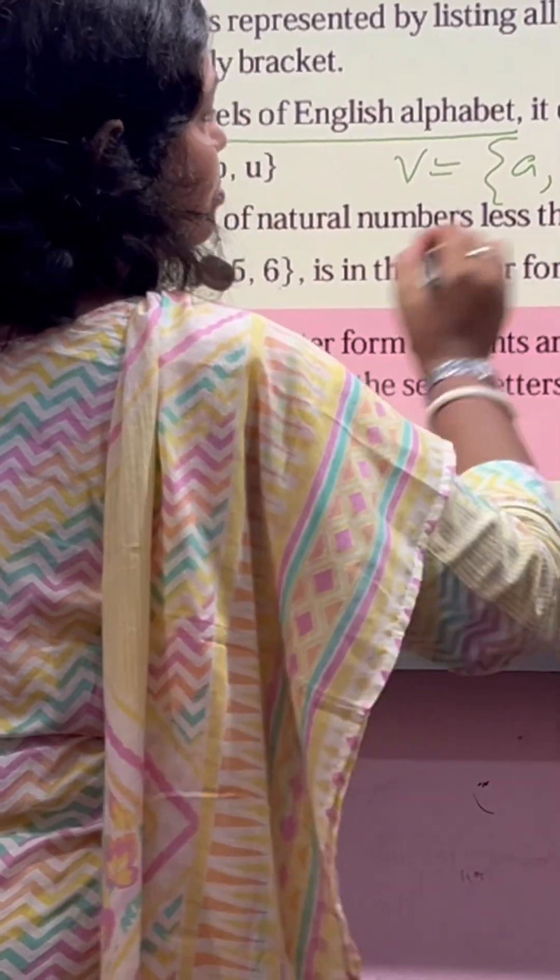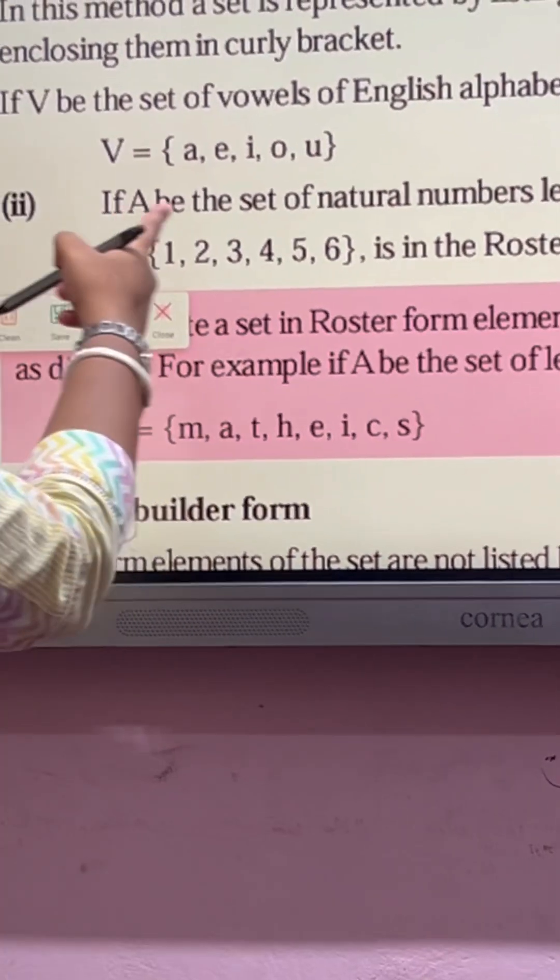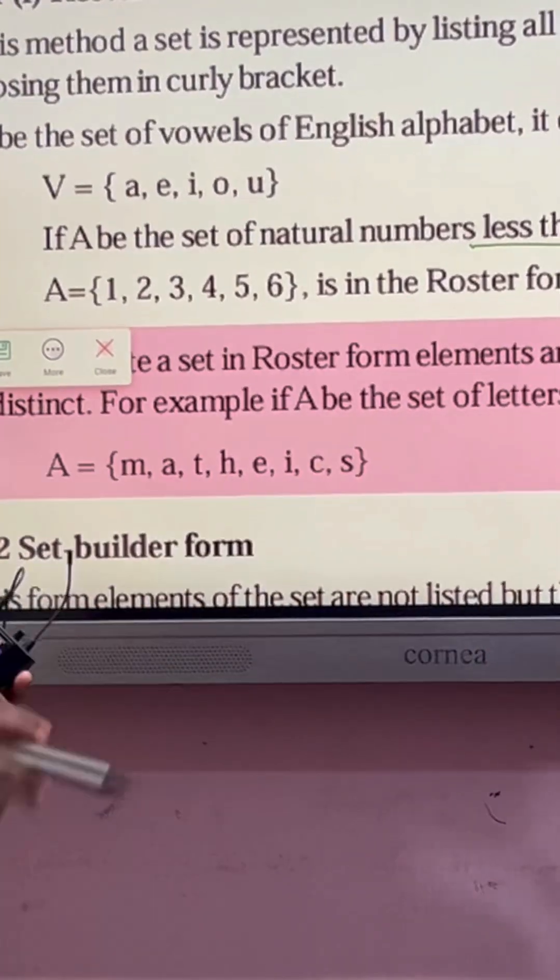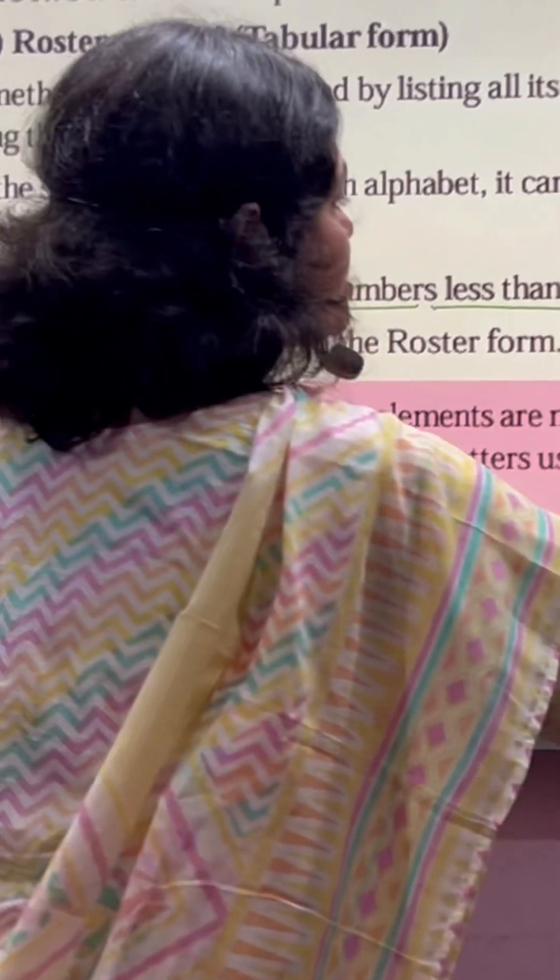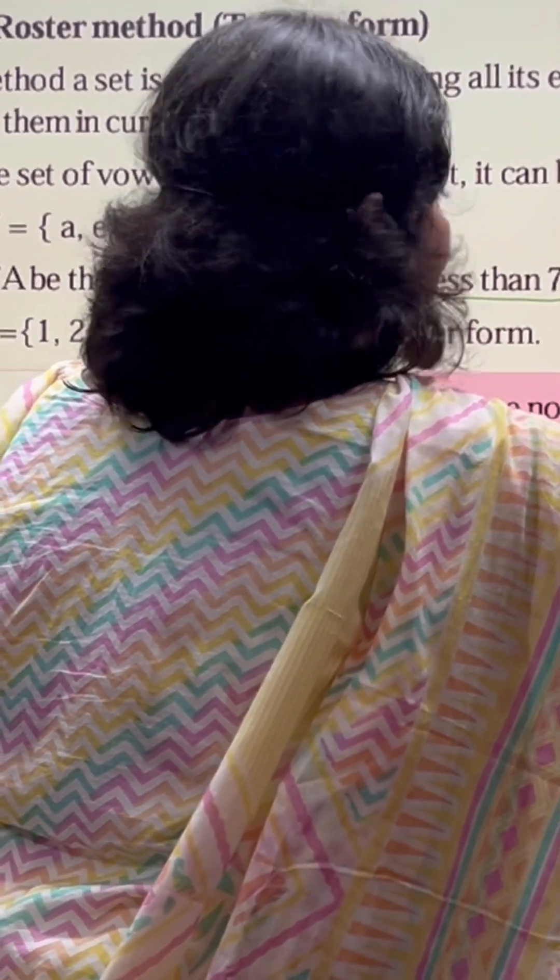This can be written as just write the vowels with commas: A, E, I, O, U. Right. Next, if A is the set of all natural numbers less than seven. Natural numbers start from one, two, three, like that.